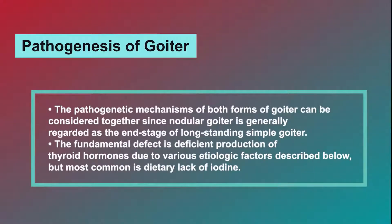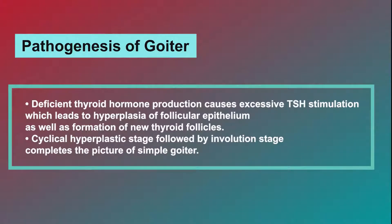The pathogenetic mechanisms of both forms of goiter can be considered together, since nodular goiter is generally regarded as the end stage of long-standing simple goiter. The fundamental defect is deficient production of thyroid hormones due to various etiologic factors, but most common is dietary lack of iodine. Deficient thyroid hormone production causes excessive TSH stimulation, which leads to hyperplasia of follicular epithelium as well as transformation of new thyroid follicles. Cyclical hyperplastic stage followed by involution stage completes the picture of simple goiter.